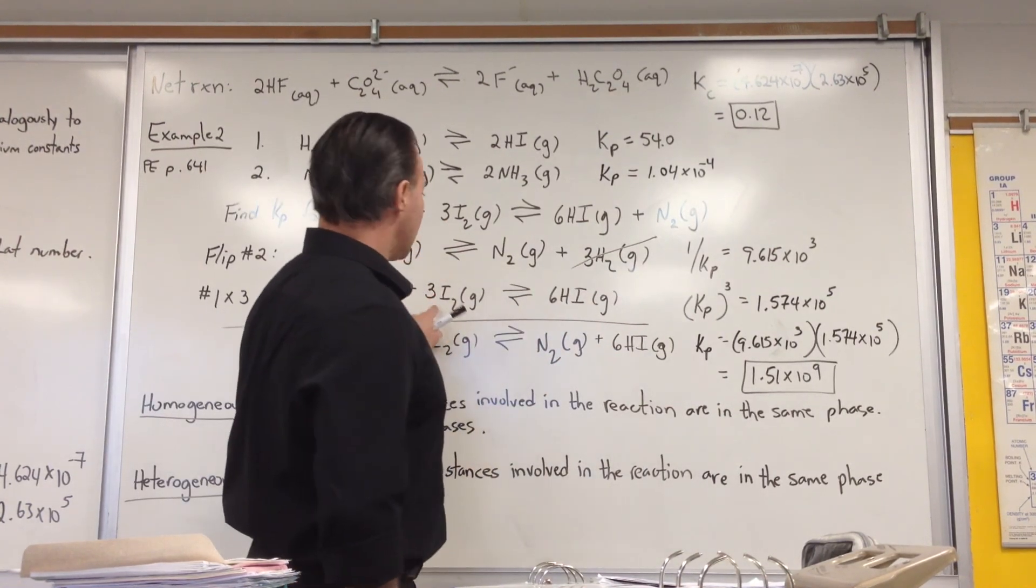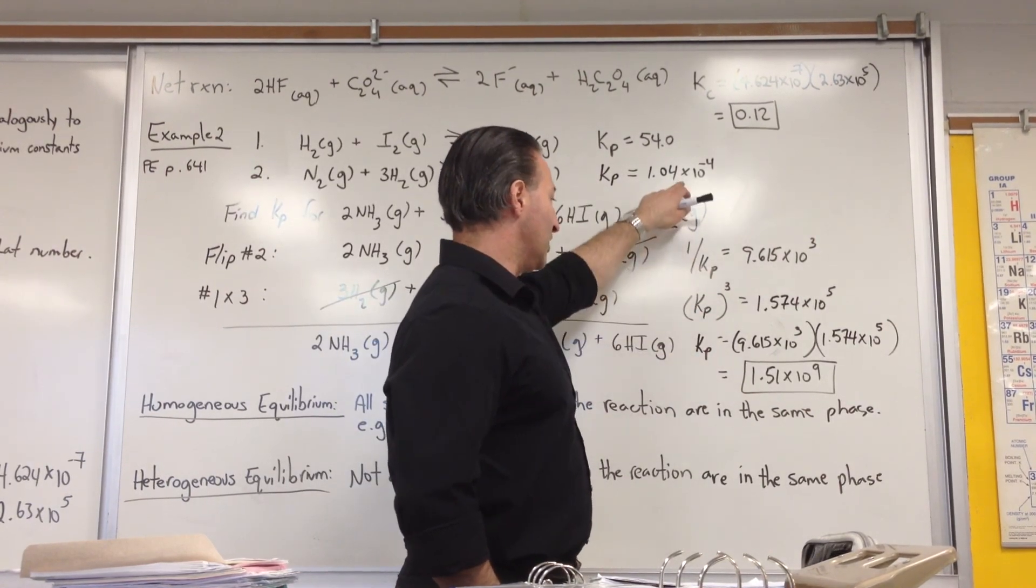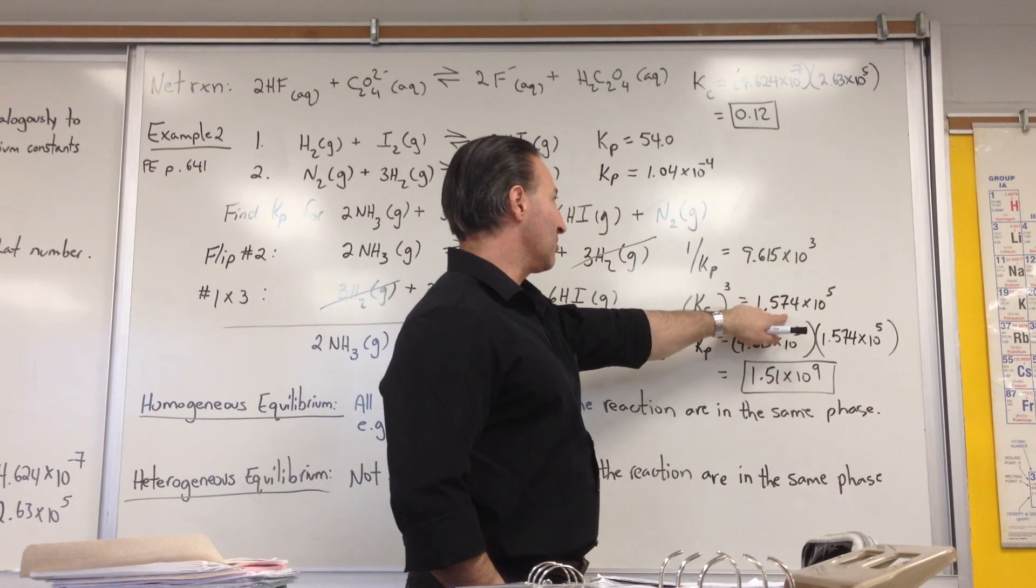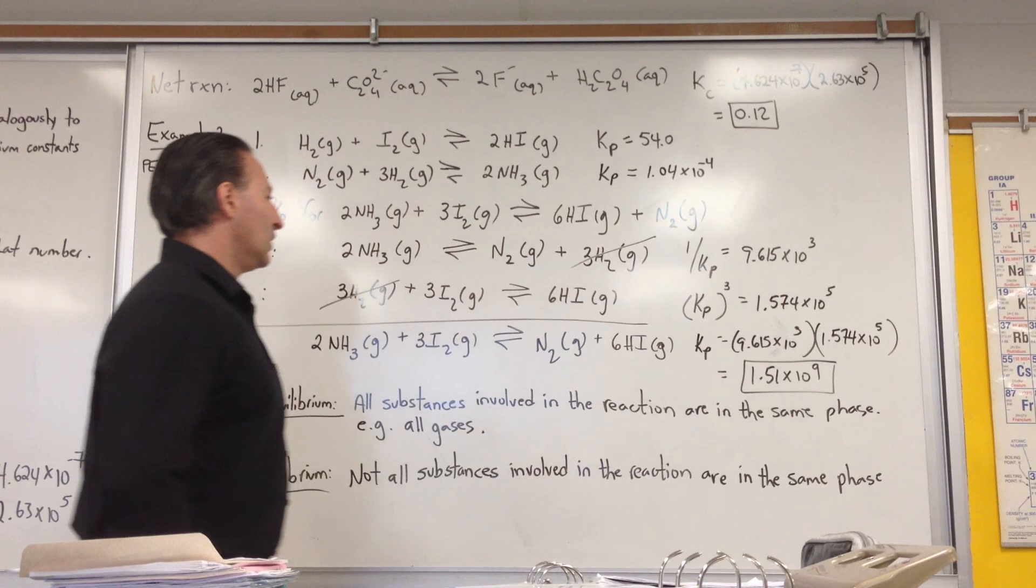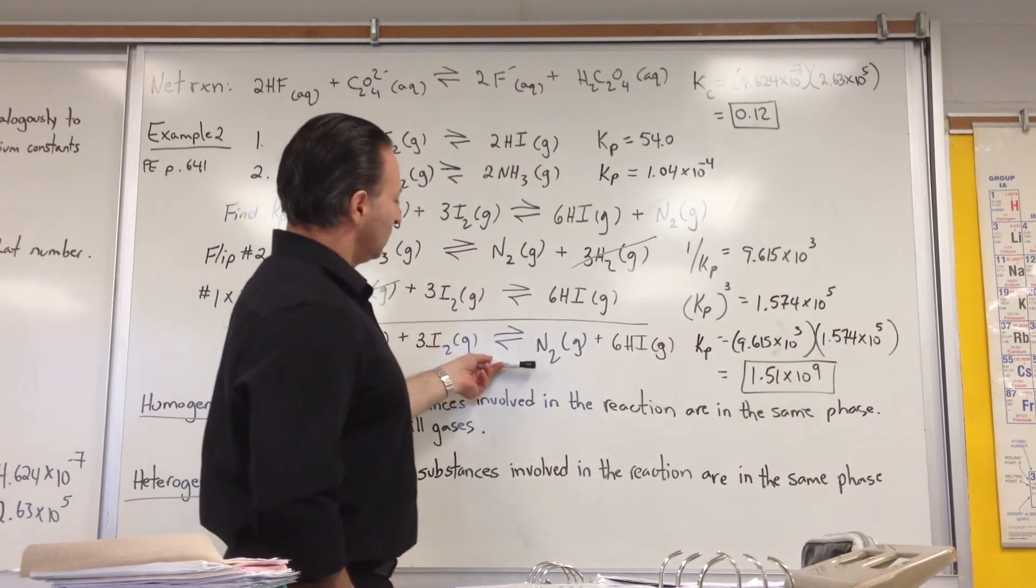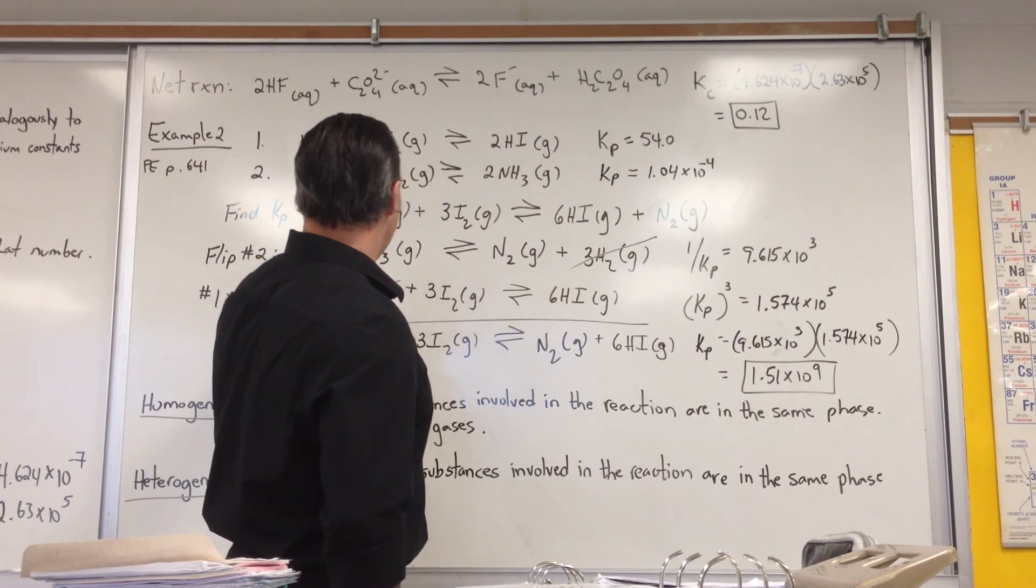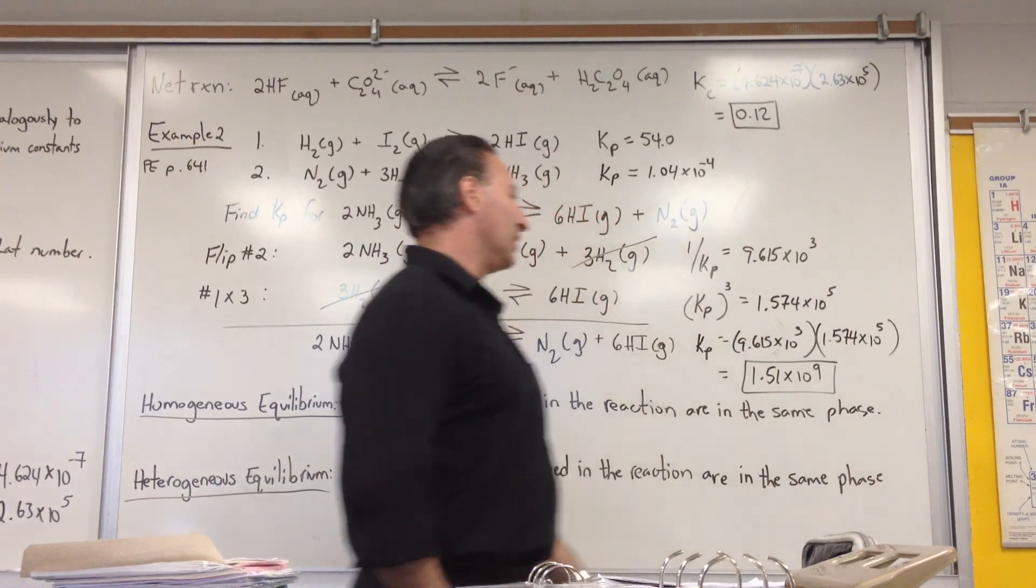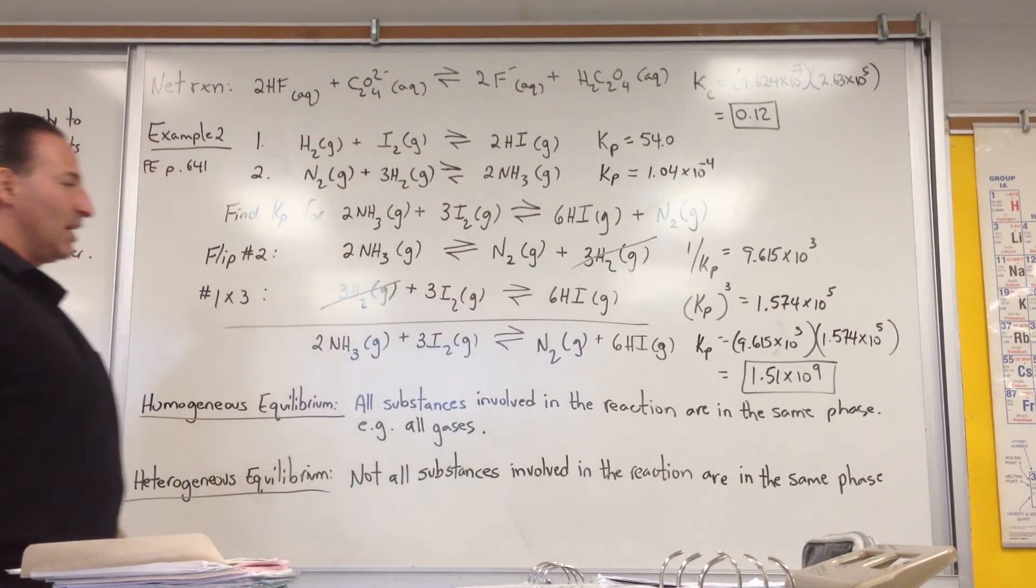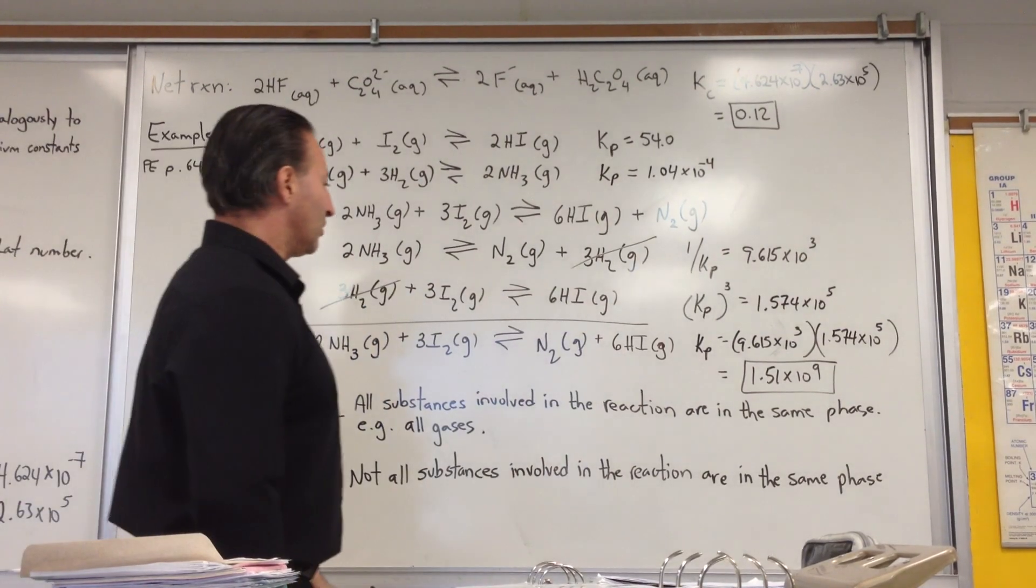When we multiply this equation by three, we raise the Kp associated with this equation to the power of three and it gives this number. So this number raised to the power of three will give this number. The resulting equilibrium for the target equation is based on the addition of these two equations. When you add the two equations, you multiply their appropriate equilibrium values. So you get a value of 1.51 times 10 to the 9 as the final equilibrium constant.